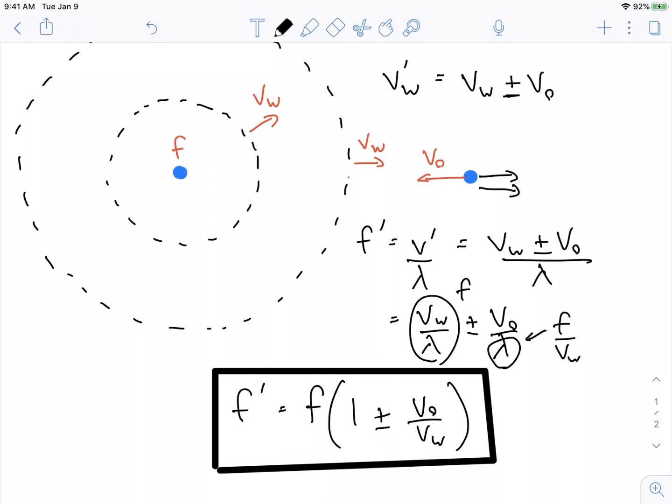If you're moving away, the wavefronts catch up to you slower, and you should hear a lower frequency. So you want to multiply your original frequency times a number that is smaller than one - one minus something. This is your basic formula for a moving observer.